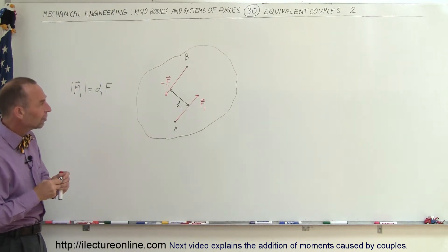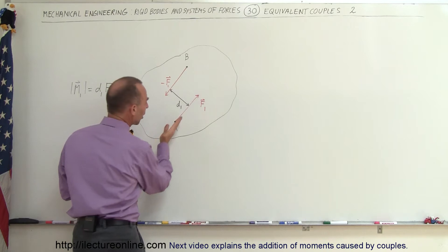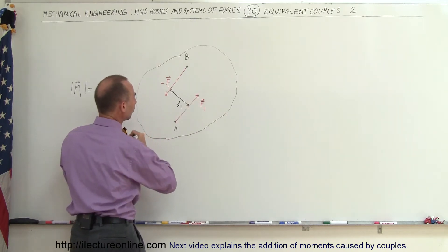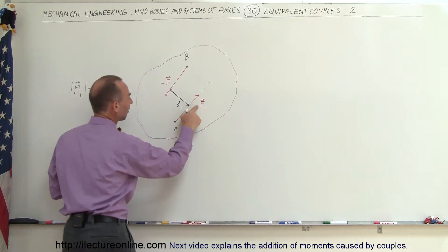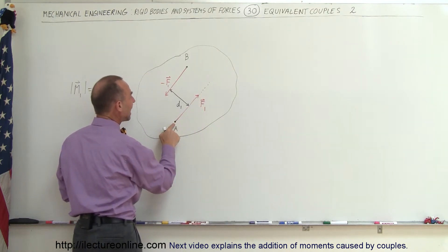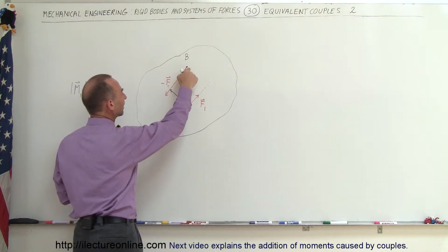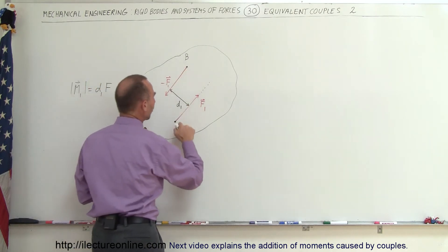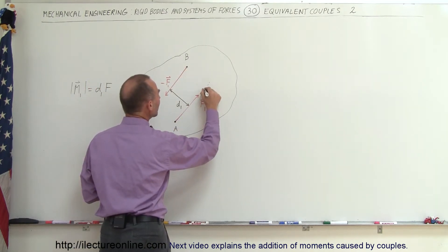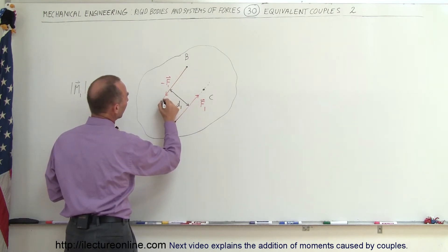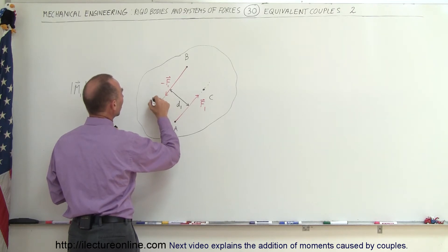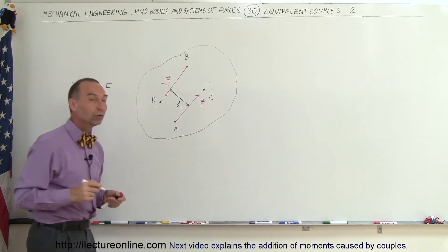Now what happens if we move along the line of action of each of these two forces to some different location? Notice that F1 is acting at some point A and negative F1 is acting at some point B. So let's go from point A to point C, and from point B to point D. Notice that we moved the same amount of distance in each case along the line of action of the two forces.